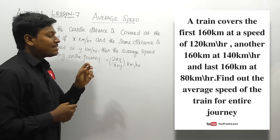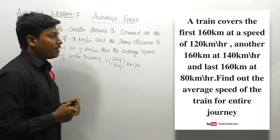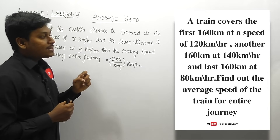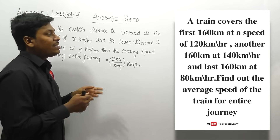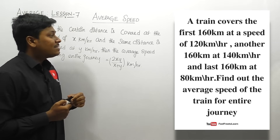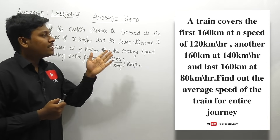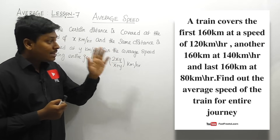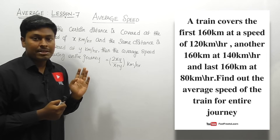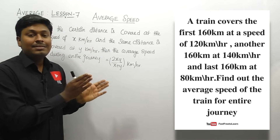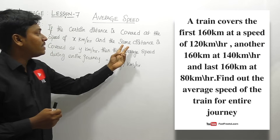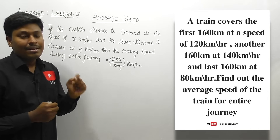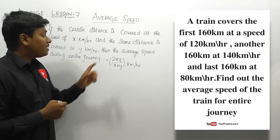Question number two: a train covers the first 160 kilometers at 120 kilometers per hour, another 160 kilometers at 140 kilometers per hour, and the last 160 kilometers at 80 kilometers per hour. Find the average speed for the entire journey. In all three cases the distance traveled is the same — 160 kilometers each — so we use the same-distance formula.